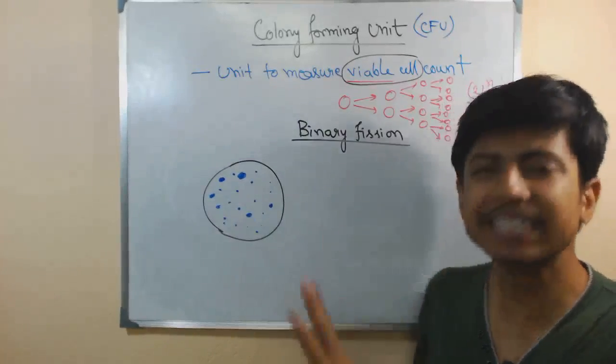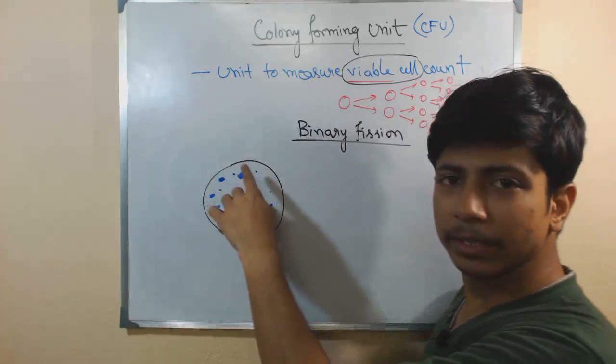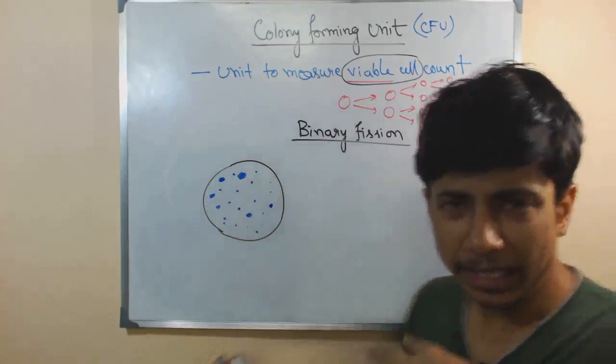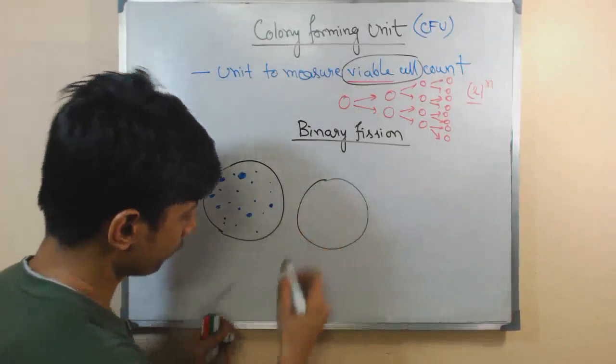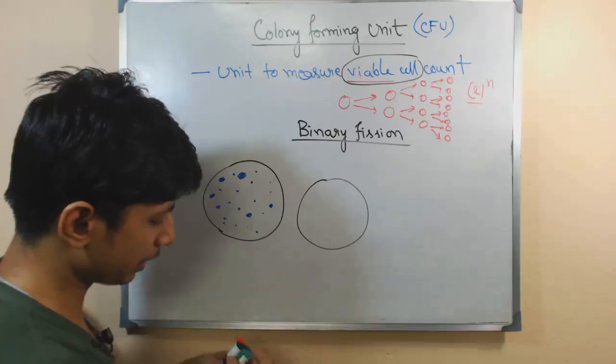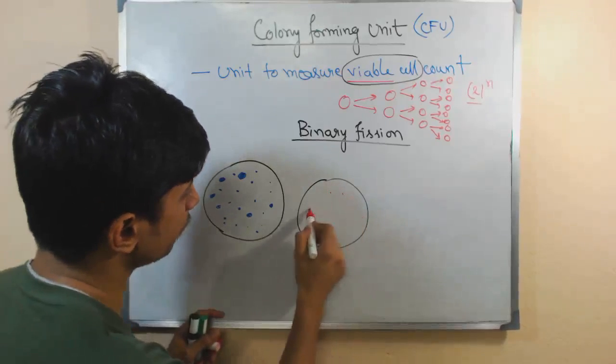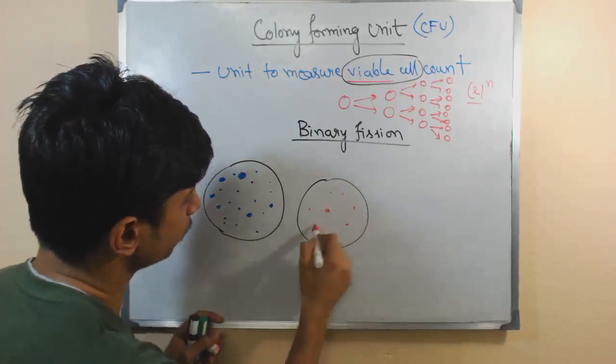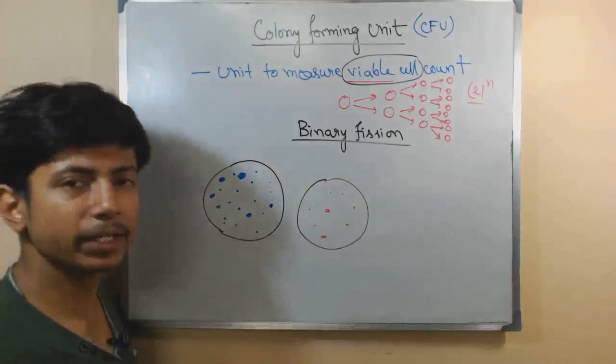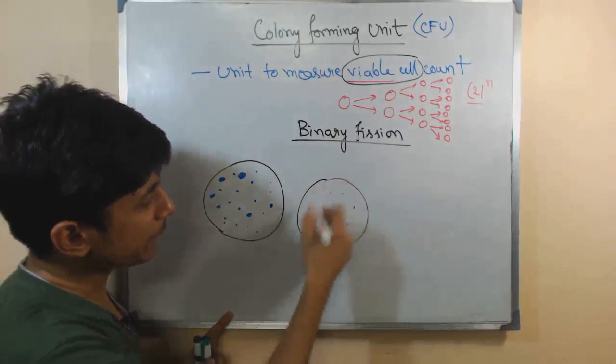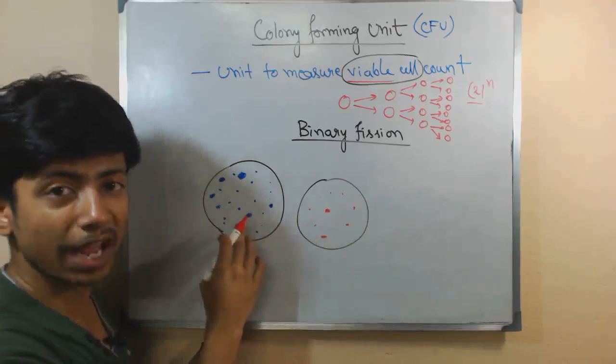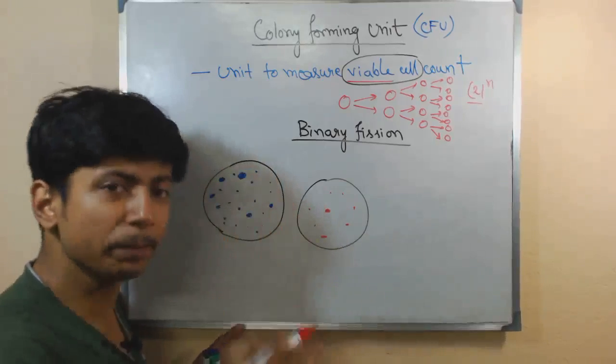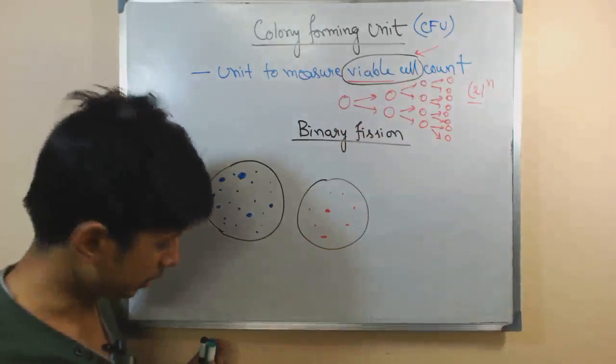Right? That is the simplest idea. We can calculate it. Let's say in this plate, and in another plate we do the same thing with another bacteria and we find very few colonies. What we can say is that this bacteria has very less viability than the other bacteria. This bacteria is much more viable than that one.